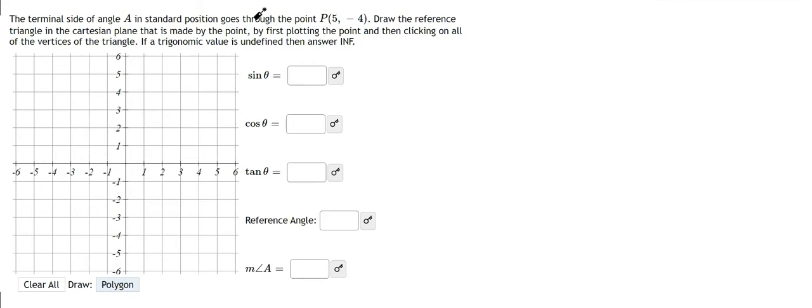Hey, everybody. So in this video, it says the terminal side of angle A in standard position goes through this point, 5, negative 4. Draw the reference triangle in the Cartesian plane that is made by the point, first by plotting the point and then clicking on all the vertices of the triangle. If the trigonometric value is undefined, then answer INF.